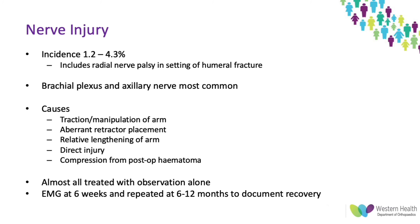The last complication is nerve injury, with a varying incidence of 1.2 to 4.3%. This study included radial nerve palsies in the setting of humeral fracture, so these aren't isolated nerve injuries. The most common are brachial plexus injuries and axillary nerve injuries. Causes include tractioning of the arm, aberrant retractor placement, and distalization of the humeral shaft — which has been shown to increase strain on median nerve roots by up to 19%, causing a traction neuropraxia — as well as direct nerve injury and compression from post-op hematoma. Almost all are treated with observation and EMG follow-up.